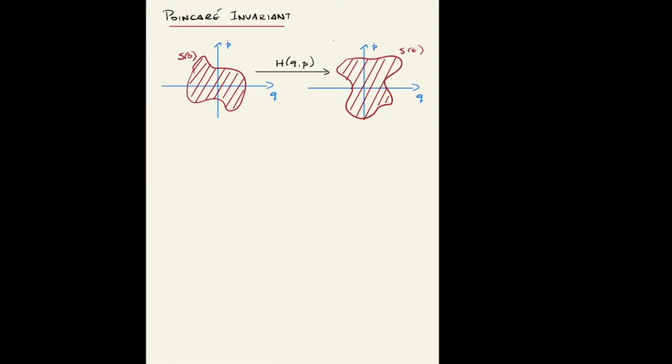The Poincaré invariant theorem states that the action of the Hamiltonian is such that the area of the surface remains the same. So let's now prove this theorem.